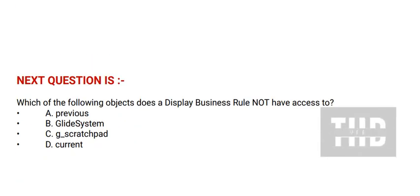Next question is: which of the following objects does a display business rule not have access to? Option A: previous. Option B: glide system. Option C: G scratch pad. Option D: current. And the correct answer is option A.